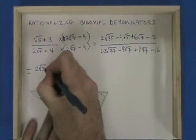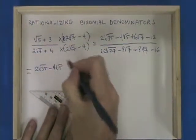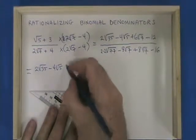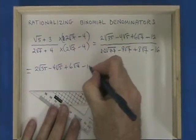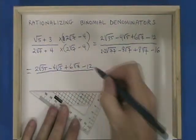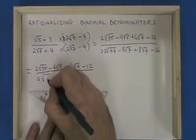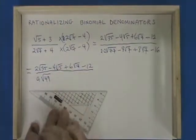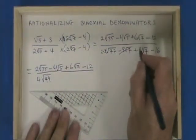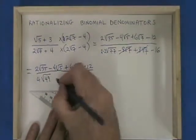The numerator cannot be simplified. 2 times 2 is 4. 7 times 7 is 49. So we have 4 root 49. The minus 8 root 7 and the plus 8 root 7 cancel, and we have minus 16.